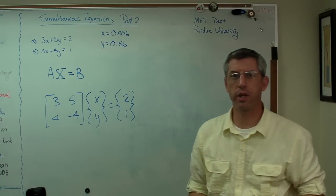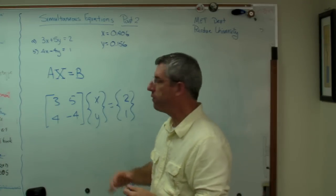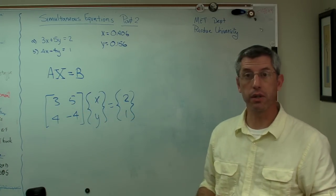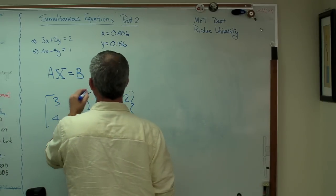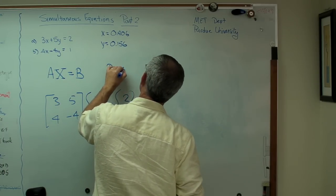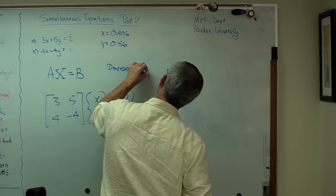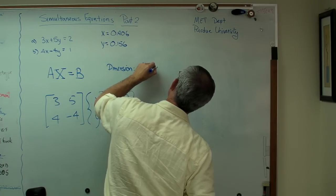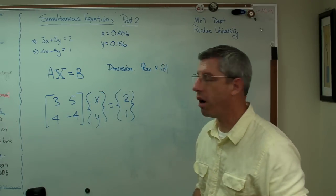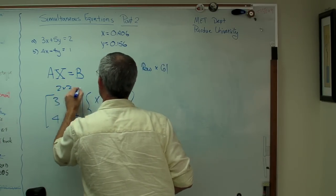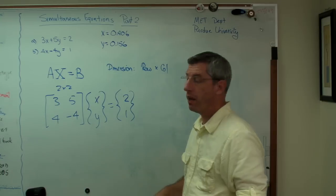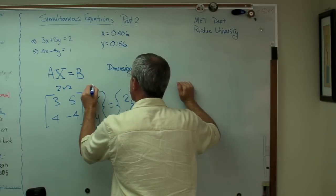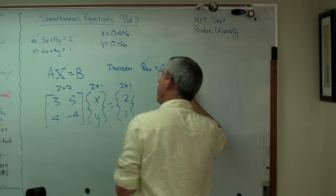So far this is just notation. I haven't changed the problem at all, just written it down in a slightly different way. Now I'm interested in the dimensions, how big these matrices are. When you write out a dimension of a matrix or vector, you do the number of rows by the number of columns. So that's 2 by 2 because that's 2 rows and 2 columns. This one has 2 rows and 1 column, and this has 2 rows and 1 column. So that's 2 by 1 and 2 by 1.